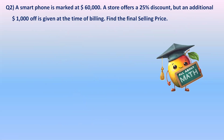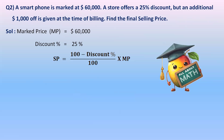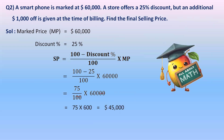Question 2: A smartphone is marked at 60,000. A store offers a 25% discount, but an additional 1,000 rupees off is given at the time of billing. Find the final selling price. The mark price is 60,000 and the discount is 25%. First, let's find the selling price using the formula: (100 − 25) / 100 × 60,000 = 75/100 × 60,000.